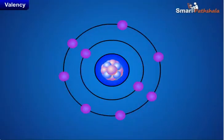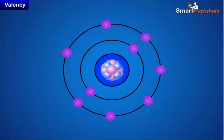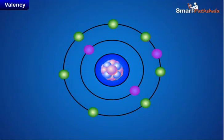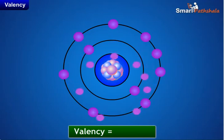For example, the fluorine atom has 7 electrons in the outermost shell, and its valence could be 7. But it is easier for fluorine to gain 1 electron instead of losing 7 electrons. Hence, its valence is determined by subtracting 7 from 8, which gives a valence of 1 for fluorine.